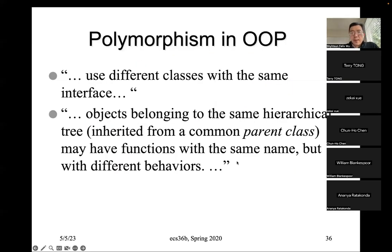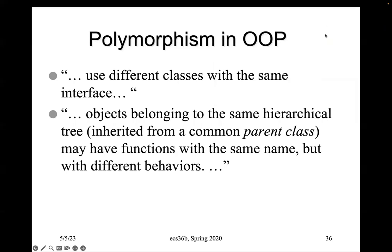We're going to continue on the topic that we started on Wednesday. On Wednesday, we talked about homework assignment number four, which is an important homework for us to really understand what is the fourth or the last key concept about object-oriented programming, called polymorphism. The inheritance is covered in chapter 13 of our textbook, and polymorphism is in chapter 14. Polymorphism usually comes with inheritance, that's why we cover both chapters together.